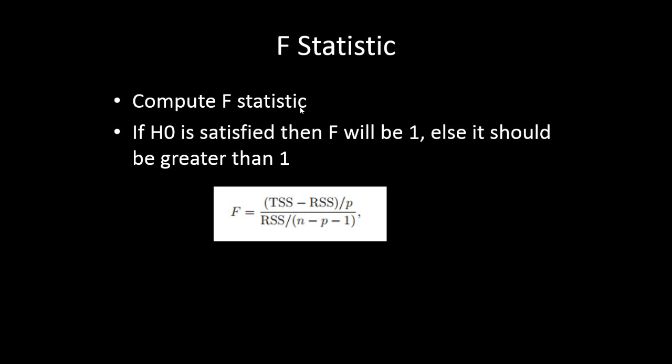We compute F statistics. The F statistic is given by (TSS - RSS)/p divided by RSS/(n-p-1), where p is the number of independent variables and n is the number of observations. Ideally, if the global null hypothesis is satisfied - that means all betas are zero, they are not jointly significant - then F will be close to 1 or equal to 1.